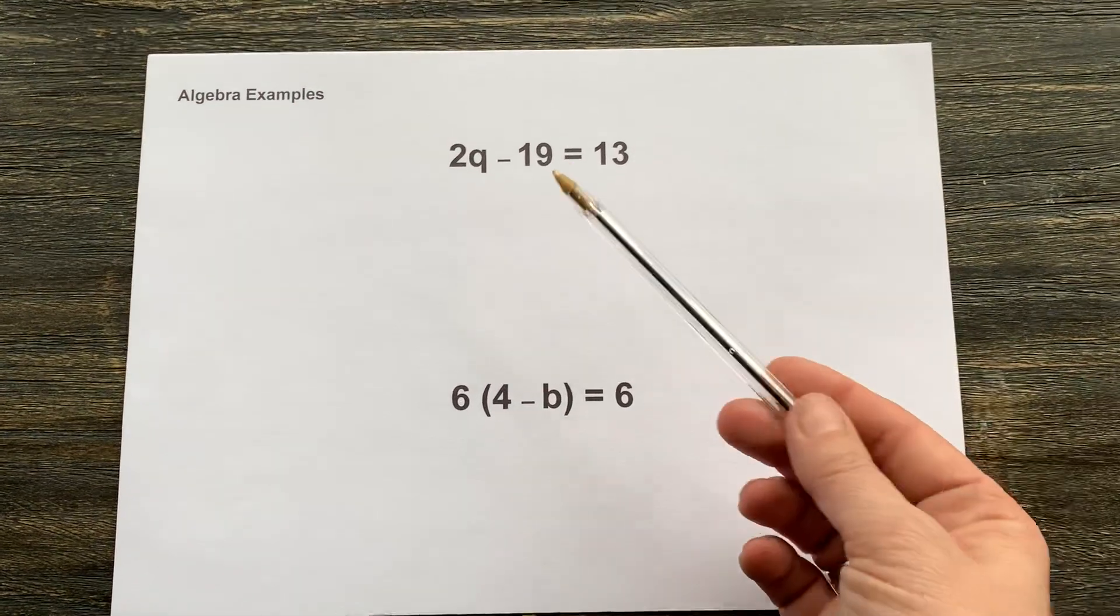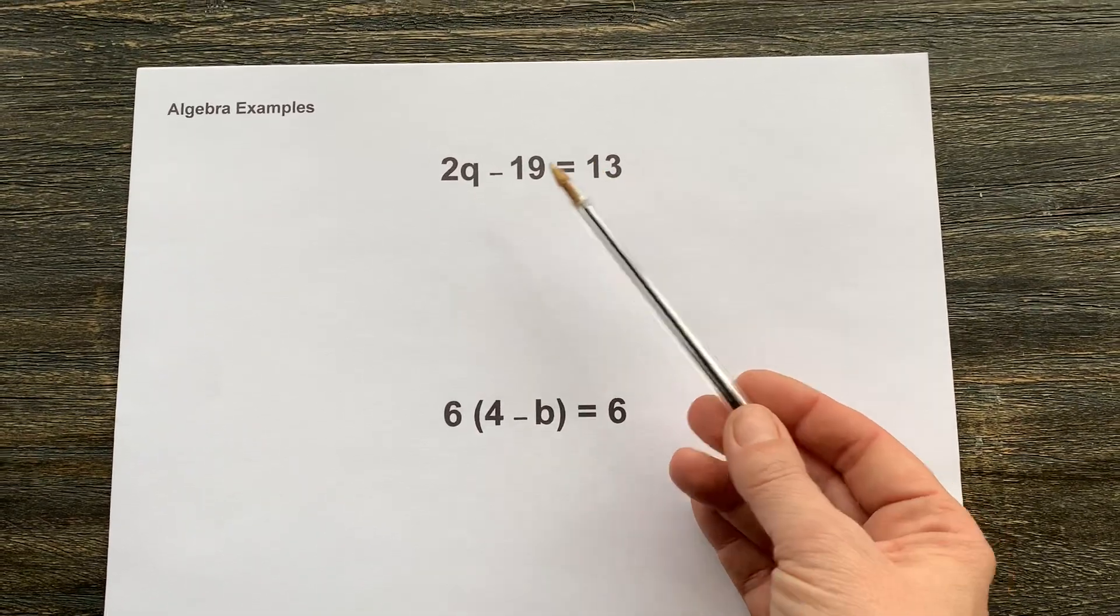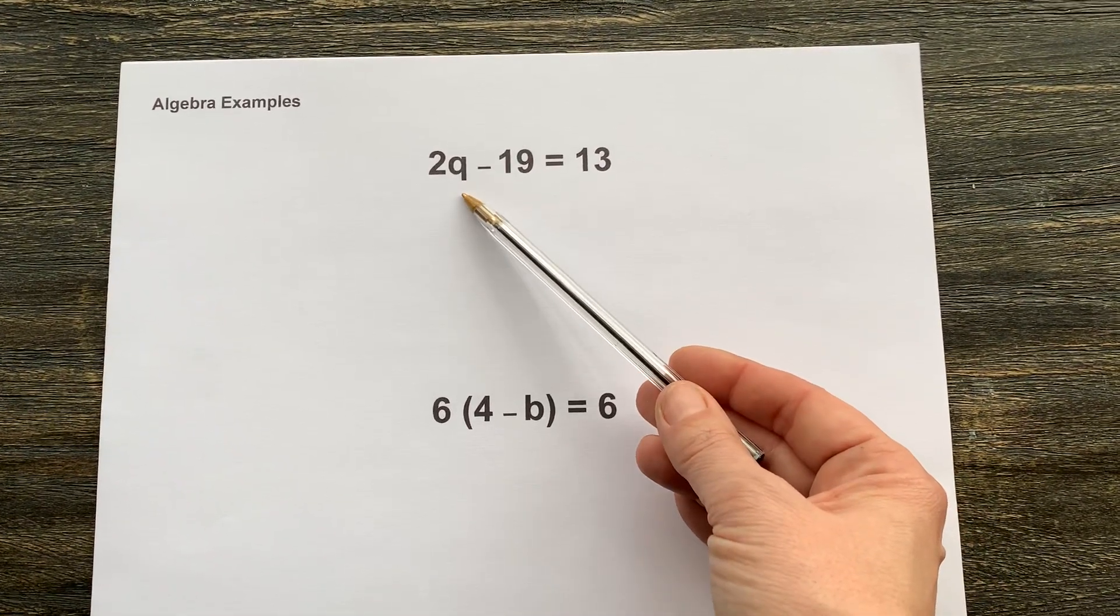So if we look at this example here, we have 2q minus 19 equals 13. We need to solve this equation to find q.